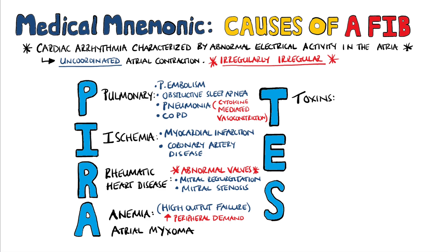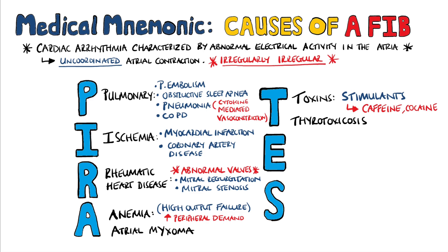T is for toxins, mainly stimulants such as caffeine and cocaine, but T is also for thyrotoxicosis. Then we have E for endocarditis and electrolyte imbalances.